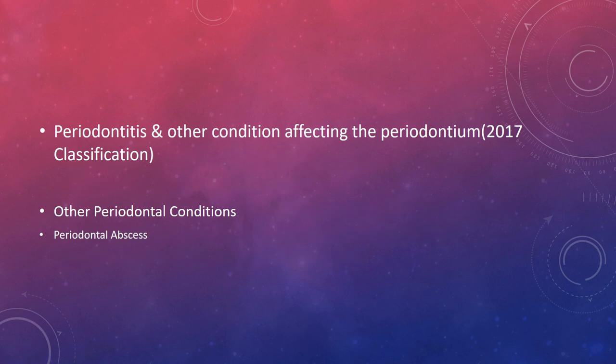Periodontal abscess is classified under periodontitis and other conditions affecting the periodontium according to the 2017 classification, because other conditions can also be the cause for periodontal abscess. So it is included under 'other conditions affecting the periodontium' in the 2017 classification.